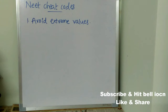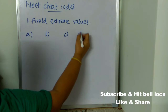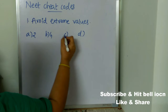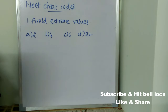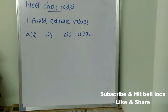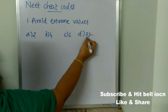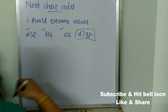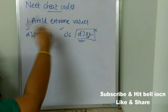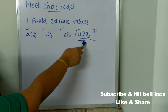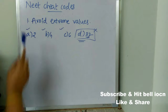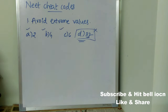First cheat code is: avoid extreme values. For example, if there are four options with values 2, 4, 6, and 32, most students think 32 is different from the other three and choose it as the answer. This is wrong. Whatever value is very different from the rest, you need to avoid it — it cannot be the correct answer.